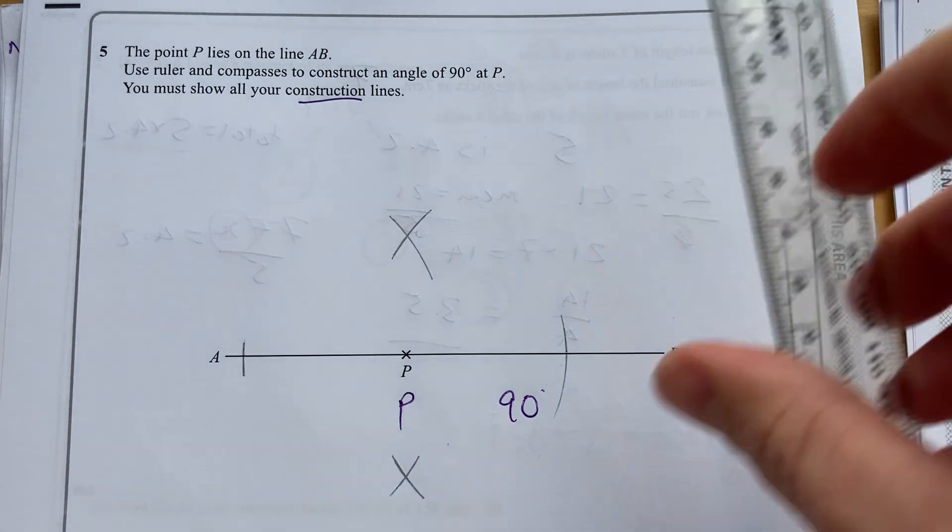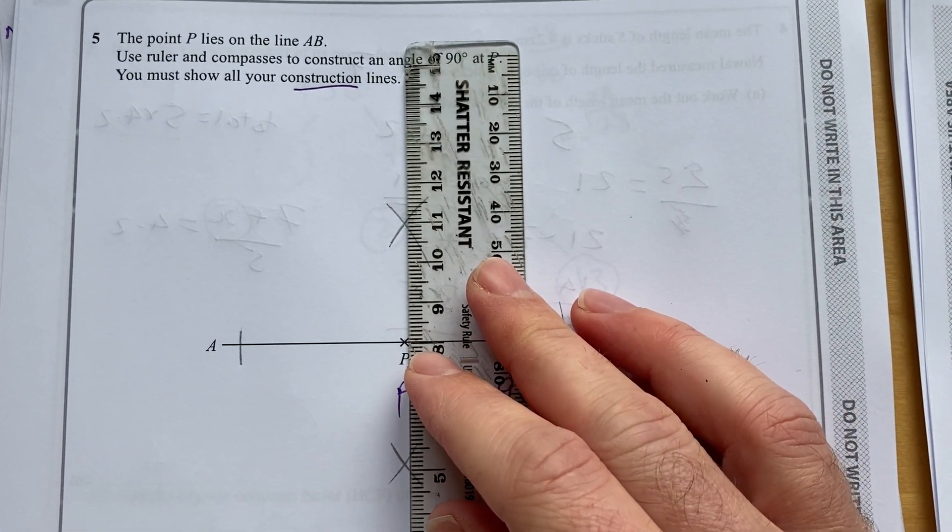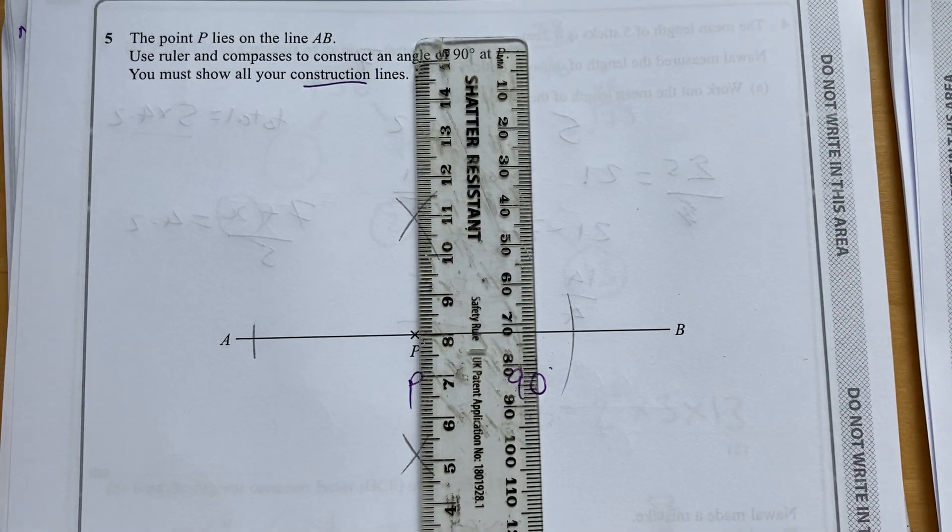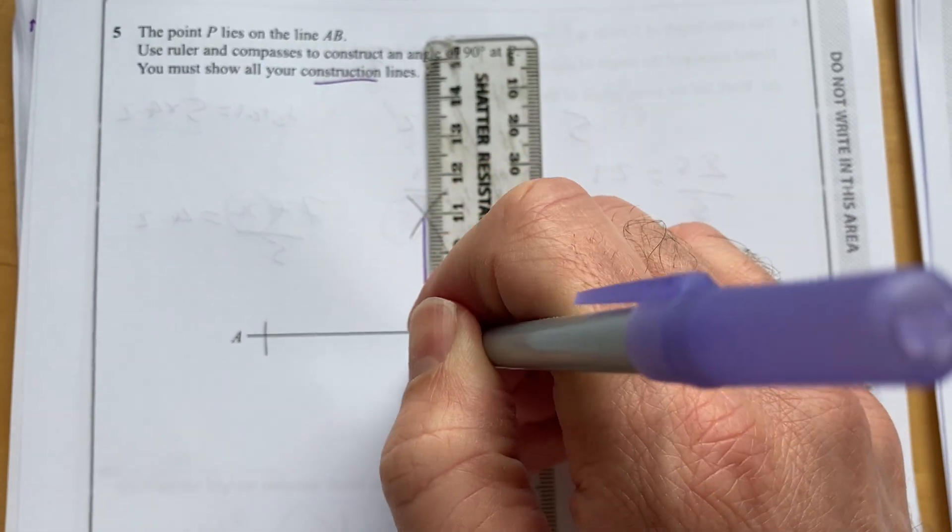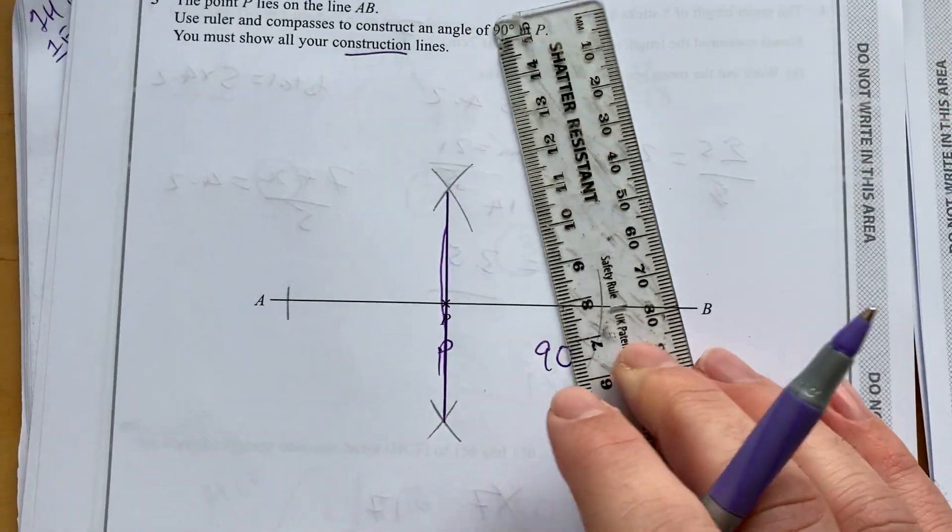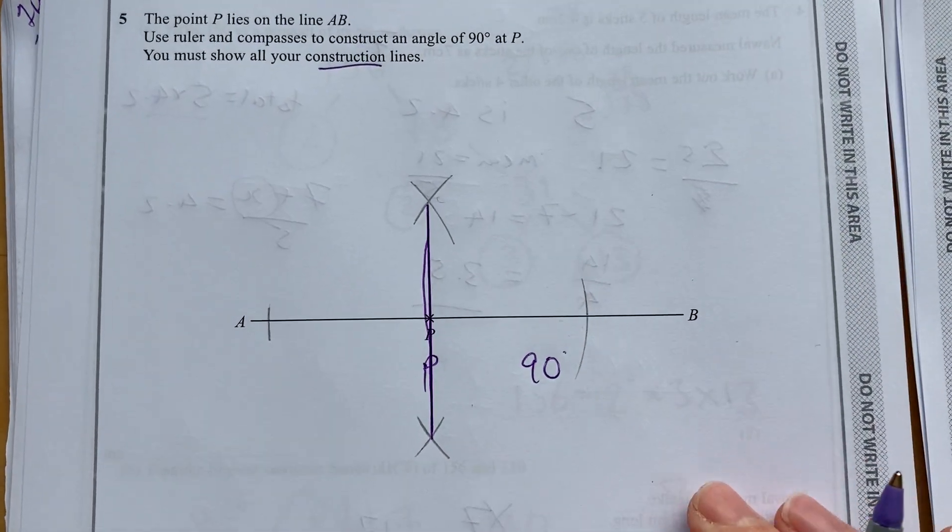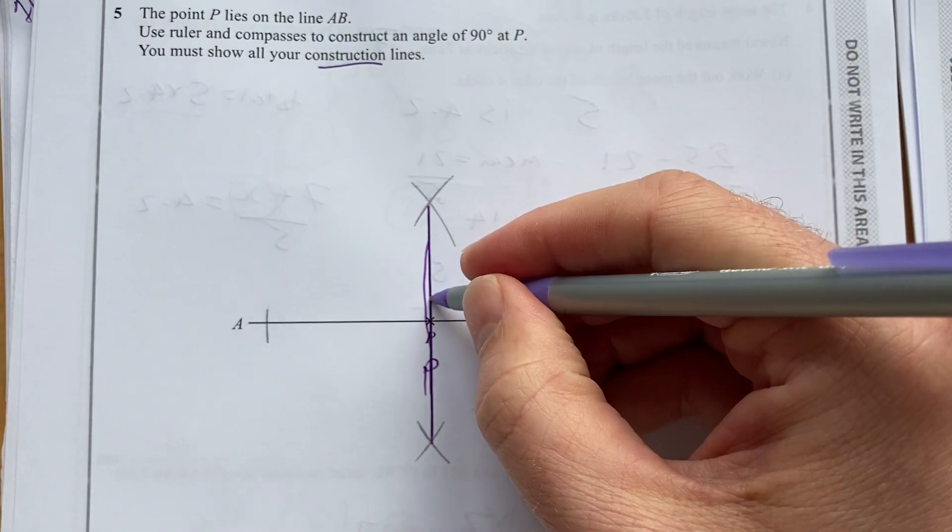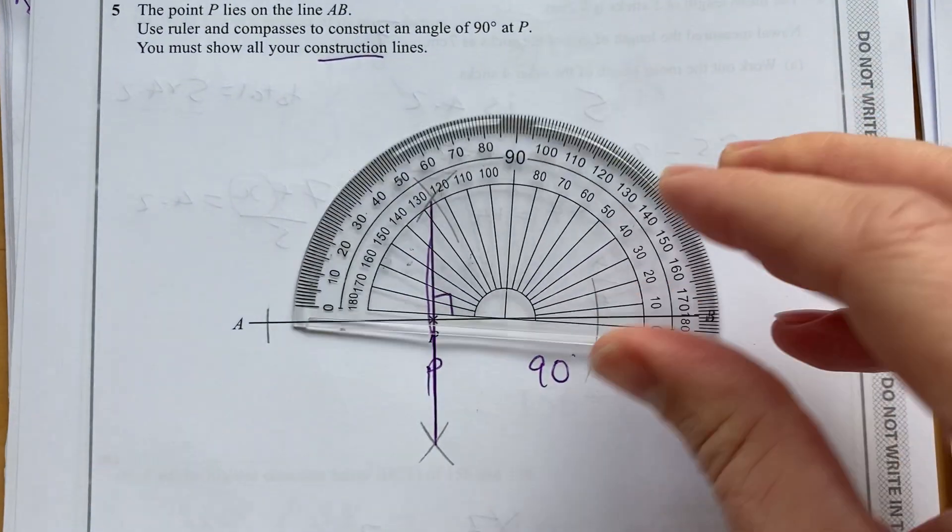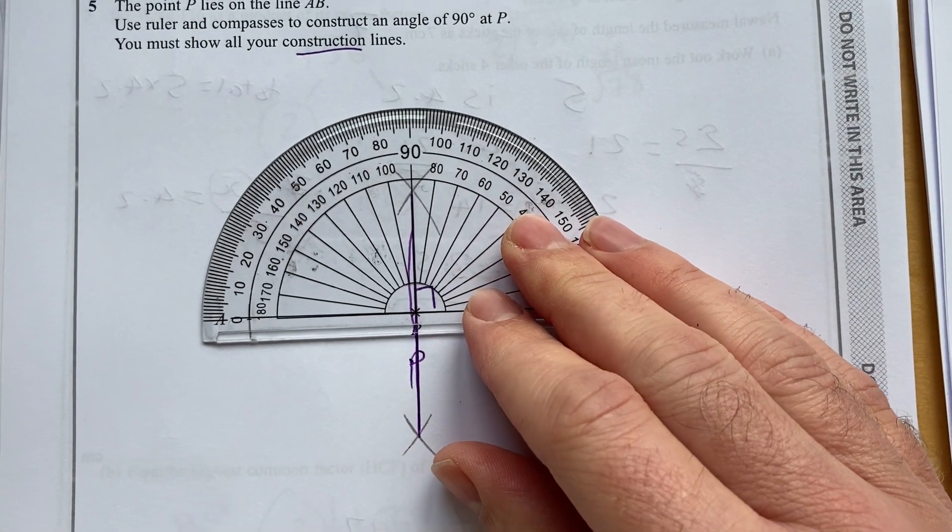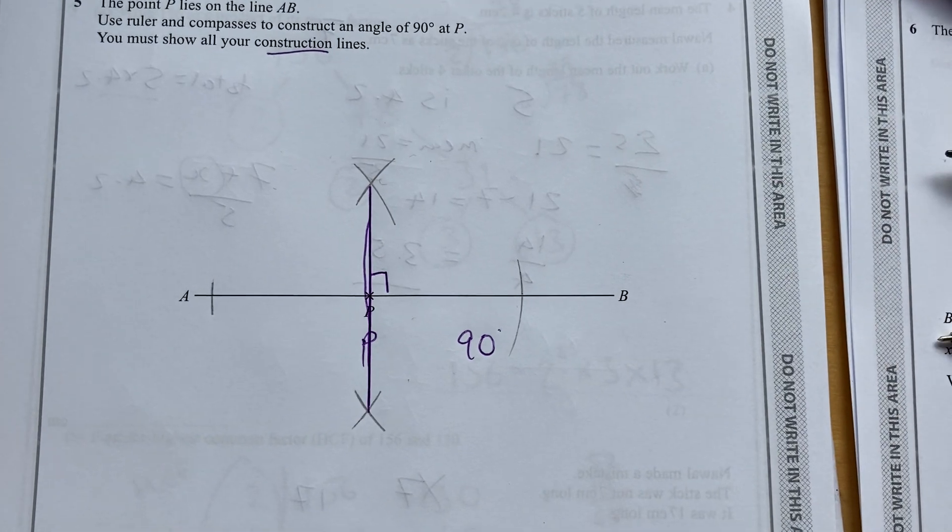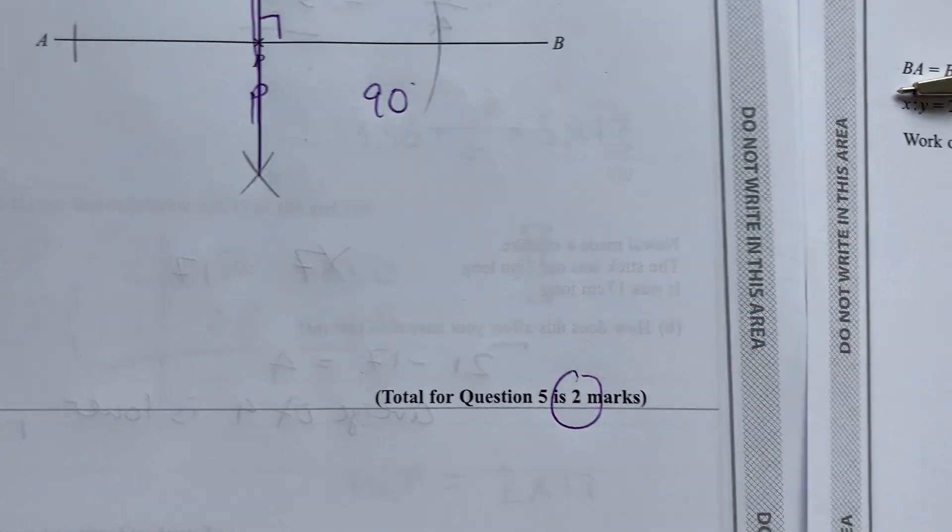So we should have, you must have these construction marks. It says you must show all your construction lines. Now I would take a ruler, and if I put a ruler from P up to that line there, you should use a pencil. And it must go through that construction mark there and there, and we'll have it as 90 degrees. And if you've got your protractor with you, you can check that. And if you've done everything correctly, it should be 90 degrees. That's a nice two-mark question.